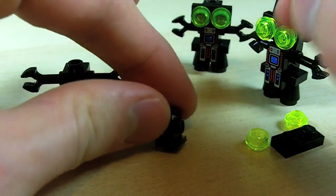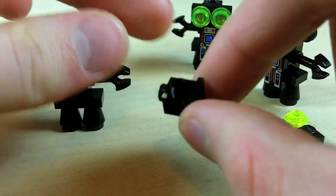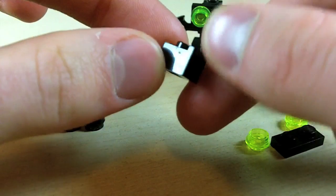And then for the head, take one of these headlight bricks here. This is all black. This has got to be hard to see. There we go. Headlight brick.